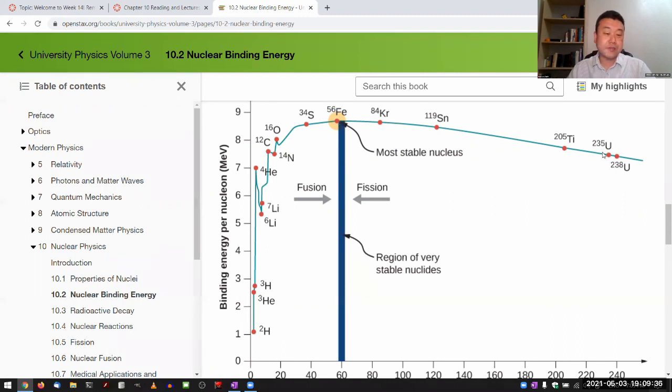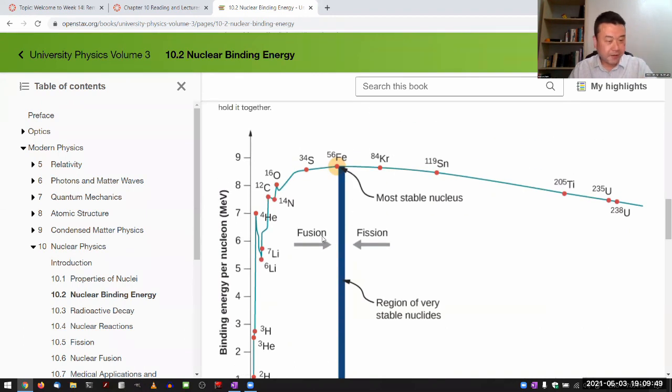If you're wondering how any elements heavier than iron get produced, they get produced in supernova explosions in a non-equilibrium, non-quasi-static interaction.